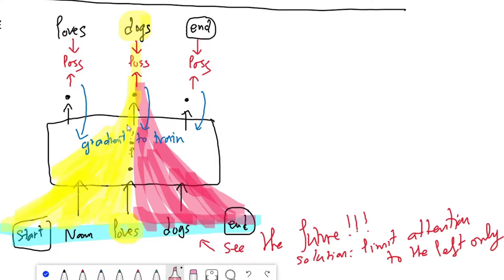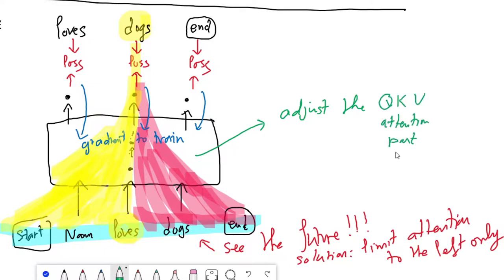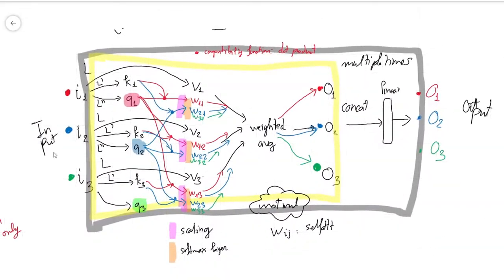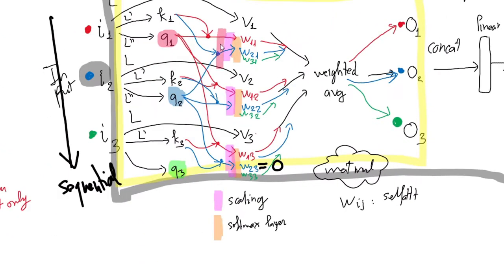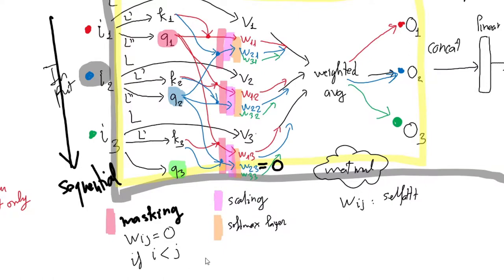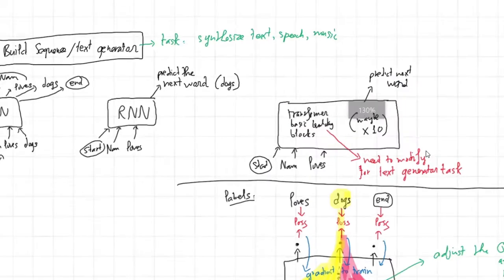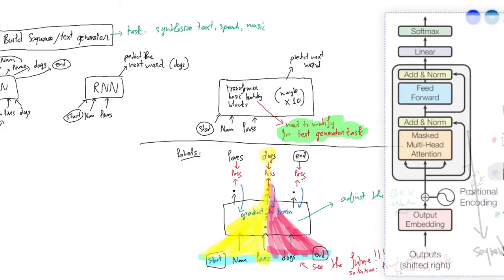To limit attention to the past, we go back and adjust the query-key-value attention. For input sequence i1, i2, i3, at position i2 we cannot see i3, so we force w23 to be zero. The paper does this by adding a masking layer that sets certain scores to negative infinity, making wij zero whenever i is less than j. Once this modification is made, we can train our model and use it to generate text. This block is the masked multi-head attention shown in the decoder illustration.